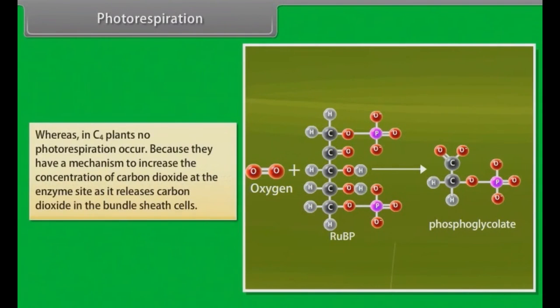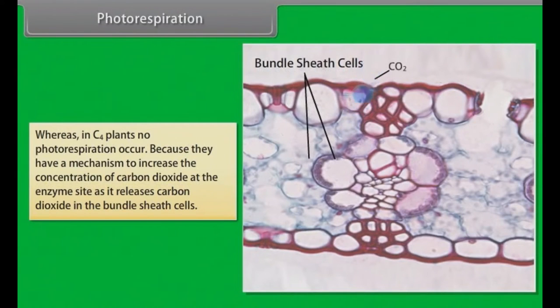Whereas in C4 plants, no photorespiration occurs because they have a mechanism to increase the concentration of carbon dioxide at the enzyme site as it releases carbon dioxide in the bundle sheath cells.